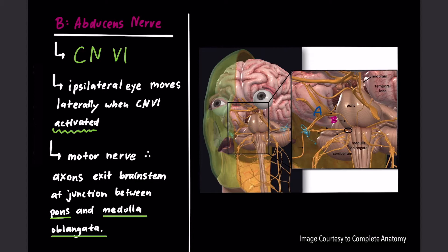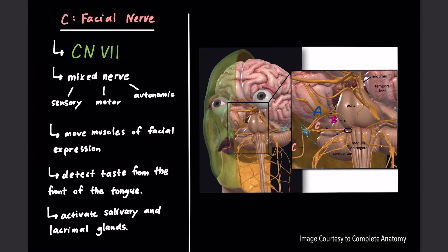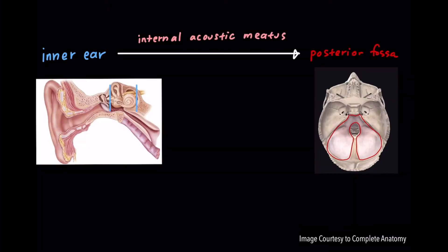It is a motor nerve, so its axons exit the brainstem near the midline at the junction between the pons and the medulla oblongata. Cranial nerve number seven is the facial nerve. It is a mixed nerve, which means it has sensory, motor, and autonomic functions. Its main role is to move the muscles of ipsilateral facial expression. However, it also has sensory roles in detecting taste from the front of the tongue and autonomic functions in activating salivary and lacrimal glands. Like the vestibulocochlear nerve, it travels from the inner ear through the small hole in the petrous portion of the temporal bone called the internal acoustic meatus to reach the posterior fossa where the brainstem sits. A small artery called the labyrinthine artery also travels through this hole in most people.